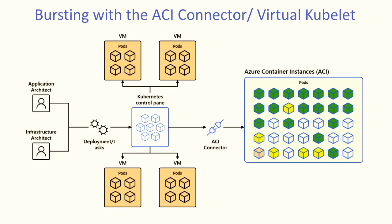Some of the use cases — one is always burst scenarios, where there's a lot of traffic. You create a connector and just spin up pods in the container instances. Your application is always on, always running. You can manage the scale, you're paying for consumption, and once the traffic is down, it gets deleted. You're only paying for consumption, it's pretty scalable, and it starts within seconds — you don't have to wait for nodes to come up.